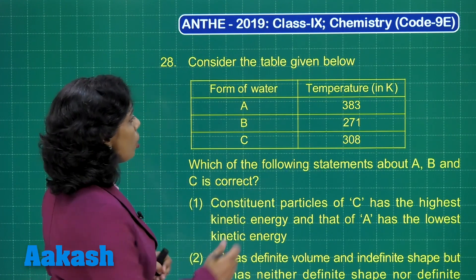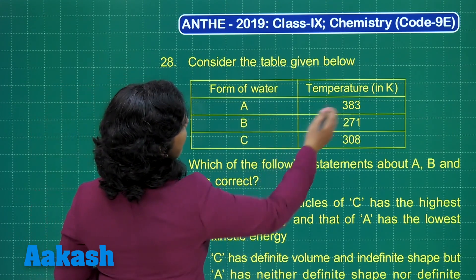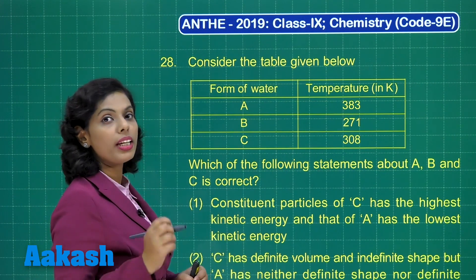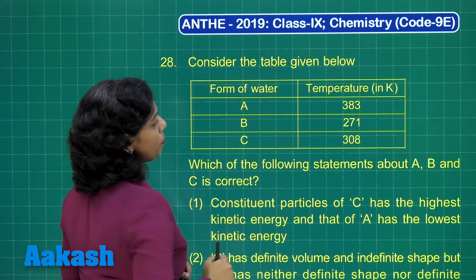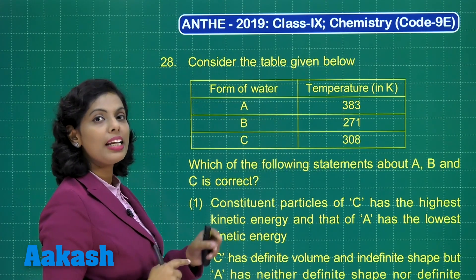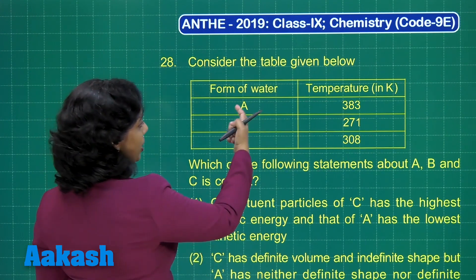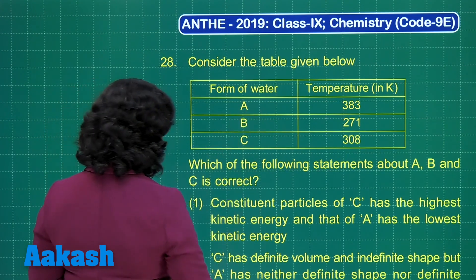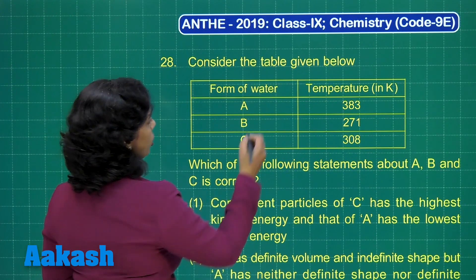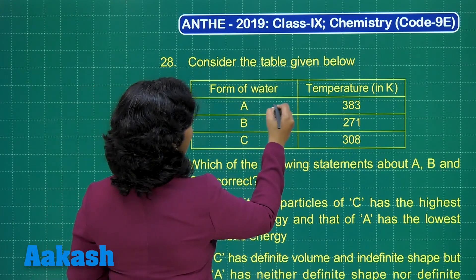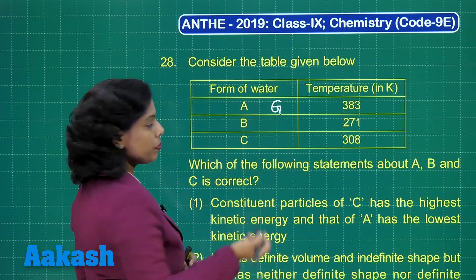Now, if I talk about A, that is at 383 Kelvin. This means the temperature is approximately 110 degree Celsius, which means this state is representing the gaseous state of water. So I'll mark here: this is the gaseous state of water, or steam.